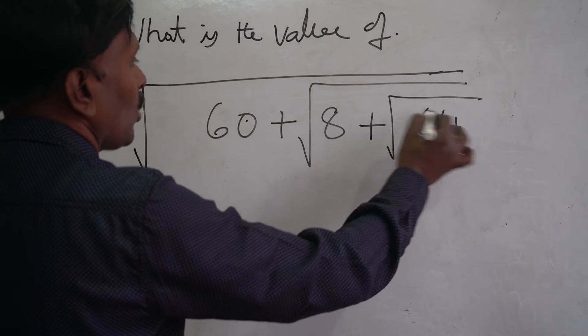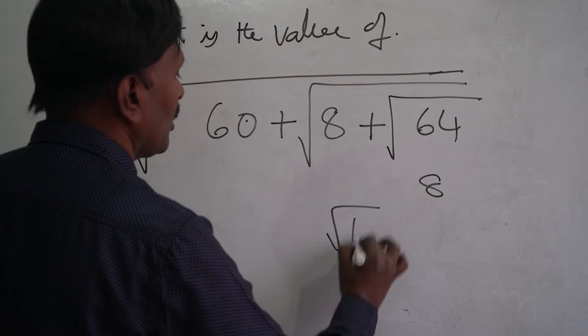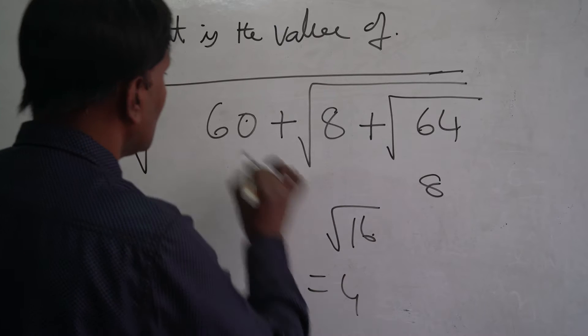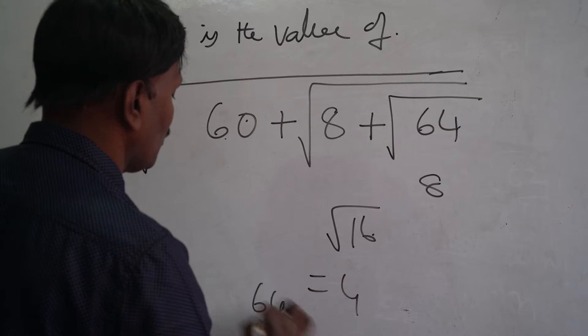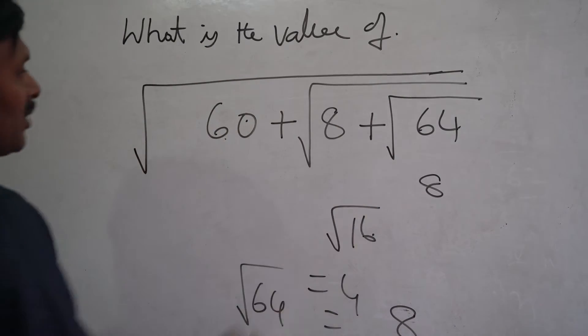See here, square root of 64 is 8. 8 plus 8 is 16. Square root of 16 is how much? 4. 60 plus 4 is how much? 64. Square root of 64 is how much? 8. So the output is 8.